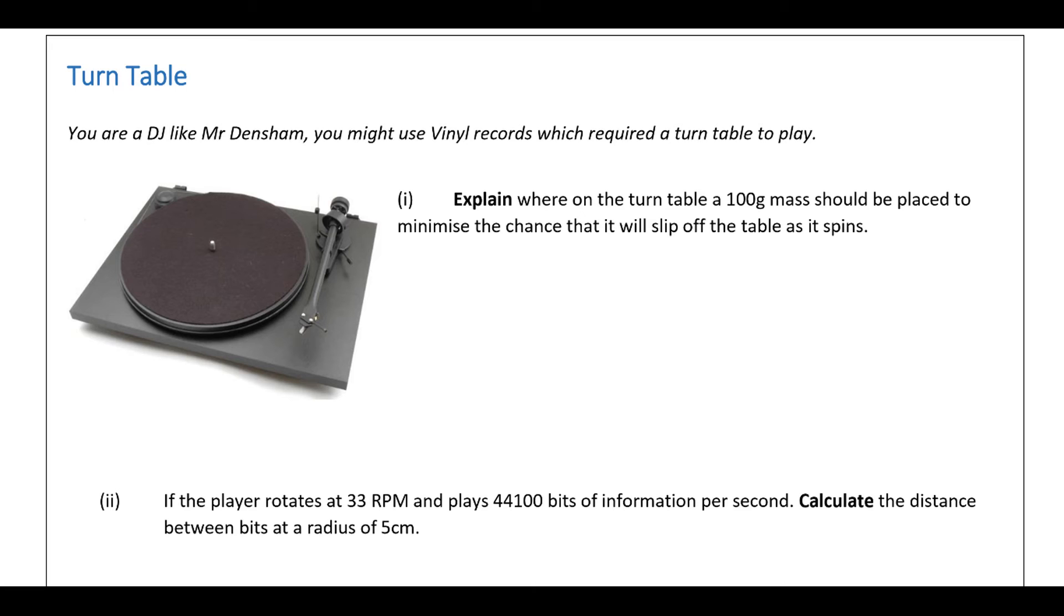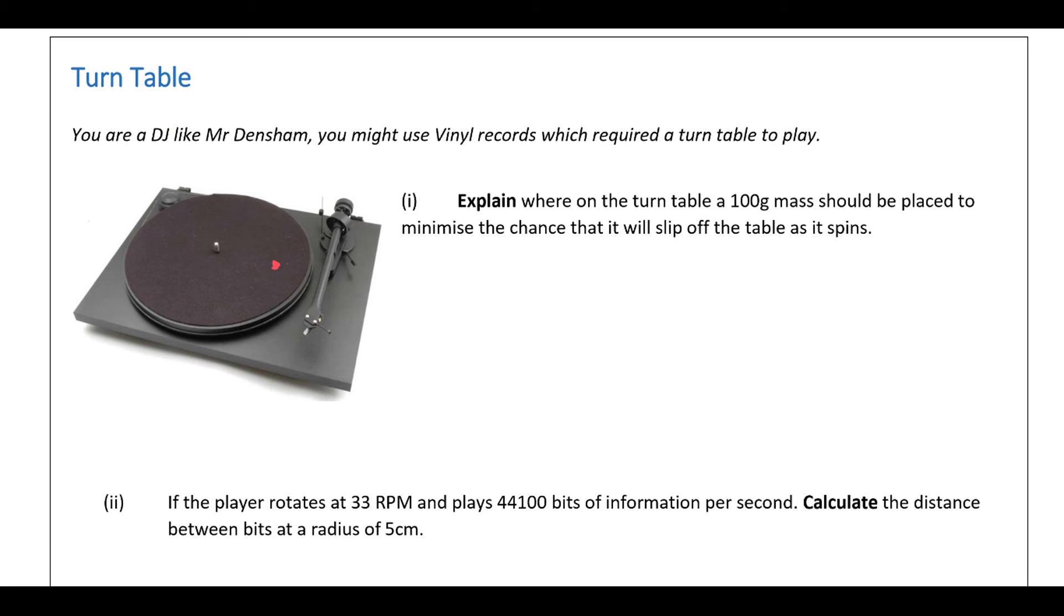Alright, so in this question we've got, we're looking at a turntable. And what we're looking at is where on the turntable should we put a 100 gram mass in order to minimise the chance that will slip off the table. So if you think, if we sort of try and show this on the diagram. So if we put a mass at a certain distance from the centre of the turntable. The first thing to identify is that the centripetal force will be provided by the friction. So in order to move in circular motion, the friction must be equal to m omega squared r. Now, if the friction is smaller than m omega squared r, what's going to happen is that the object will slide off the table. Because there's not sufficient force to keep it moving in a circle.